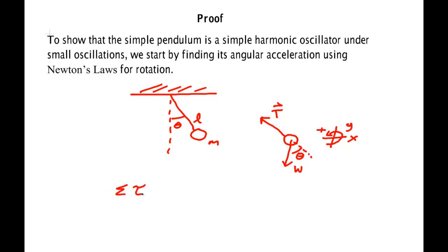And I have an axis of rotation. And the sum of the torques about this point right here, call it point P, is equal to the moment of inertia about that point times the angular acceleration.